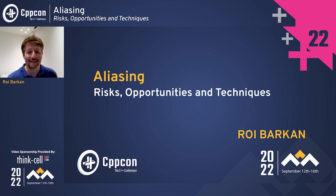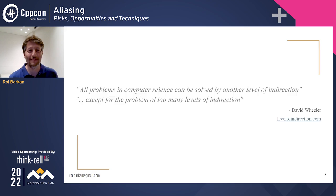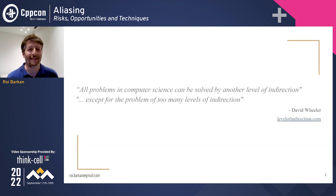I'll start with a famous quote: all problems in computer science can be solved by another level of indirection, except the problem of too many levels of indirection. Many of you might have heard this already — it's a famous quote in computer science, and it has something to do with our topic as well.